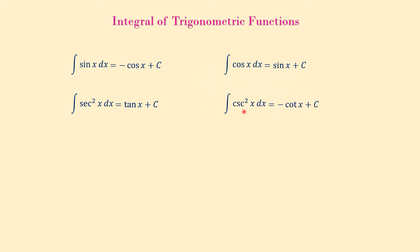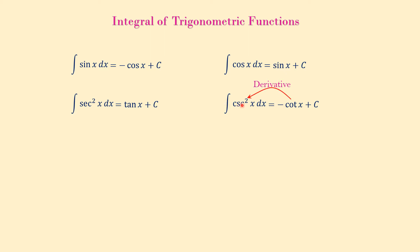The integral of cosecant squared of x dx is negative cotangent of x plus C, because the derivative of cotangent is negative cosecant squared of x, and so the derivative of negative cotangent of x is cosecant squared of x. Now let's do some examples with these formulas.